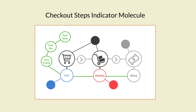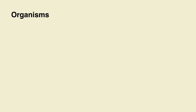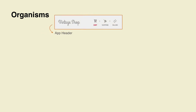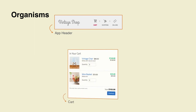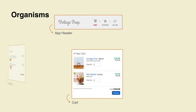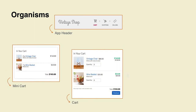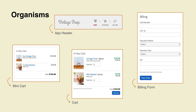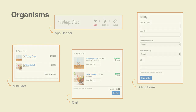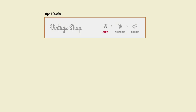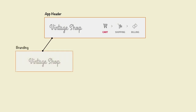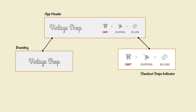As in nature, when interfaces grow in complexity and molecules bind together, the results are organisms. These organisms translate in the UI as defining sections of the application, and are more complex and contain more interactions. From our example, the app header, as well as the cart, mini cart, and the shipping and billing forms, are organisms. From a modular design perspective, you can see how organisms are systems themselves, comprised by other modules like molecules, and can have their own rules, like atoms.